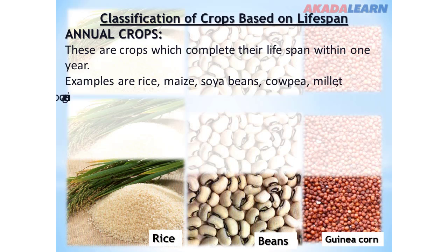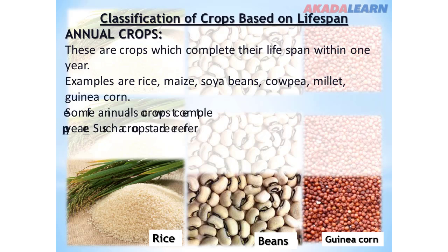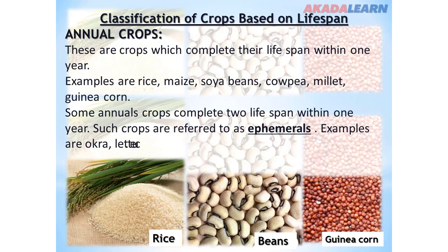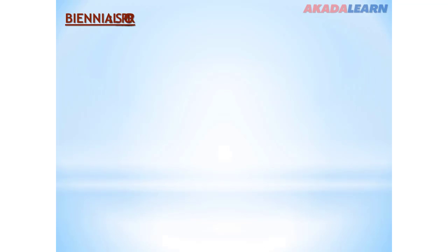Examples of annual crops are rice, maize, soybeans, sorghum, millet, and guinea corn. Some annual crops complete two lifespans within one year; such crops are referred to as ephemeral crops. Examples of ephemeral crops are okra and lettuce.